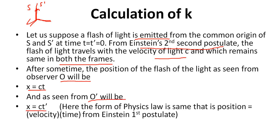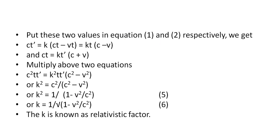And as seen from O', it will be x' equals ct'. The form of the physics law is the same — position equals velocity times time — from Einstein's first postulate. Putting these values into equations 1 and 2 respectively, we get ct' equals k(ct minus vt) equals kt(c minus v), and ct equals kt'(c plus v). Multiplying these two equations: c² tt' equals k² tt'(c² minus v²). The tt' cancels, giving k² equals c² over (c² minus v²), or k² equals 1 over (1 minus v²/c²), which is equation 5. Therefore k equals 1 over the square root of (1 minus v²/c²), which is equation 6.